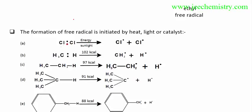A covalent bond is generated by a pair of electrons. Breaking this covalent bond requires external conditions — heat, light, catalyst, or energy from gel peroxide or similar compounds — after which homolytic fission occurs and free radicals are formed.